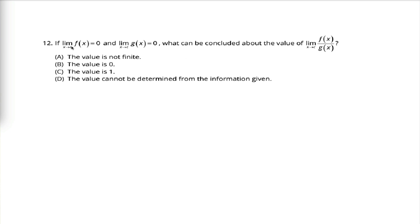So what we're told is the limit as x approaches some constant c of this function f of x equals zero, and the limit as x approaches that same constant c of some other function g of x equals zero. What we're supposed to figure out is what can we conclude about the limit as x approaches that same constant c of the quotient of those two functions, f of x over g of x.